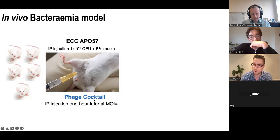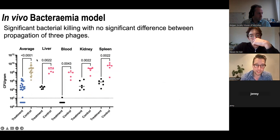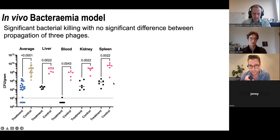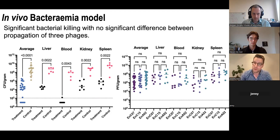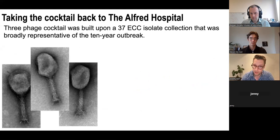We translated this into a bacteremia in vivo model — an acute infection typically 12 to 16 hours. We IP-inoculated five mice per group with the host, then one hour later gave the phage cocktail at an MOI of one. At 12 hours we euthanized the mice and collected blood, liver, spleen, and kidney for CFU and PFU counts. The control had very high bacterial load upwards of 10^9 colonies per gram of tissue. Our phage-treated groups showed a four to six log reduction in bacterial colonization — almost complete eradication in blood, with some bacterial persistors in organs that would likely be naturally cleared.